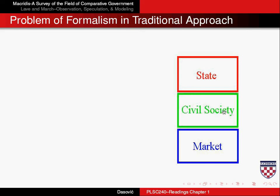Civil society, on the other hand, is that area of society where relationships are horizontal — there's no hierarchy. Another way of thinking about the state is that the relationships there are hierarchical between those who are governed and those who govern. In civil society, we meet each other as individuals, as citizens equally. Important civil society institutions include churches, NGOs, environmental groups, and other types of voluntary associations.